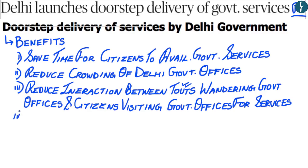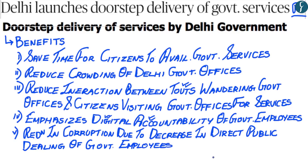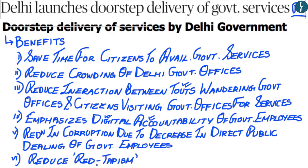The fourth benefit is digital accountability, as payment of fees, verification of documents, and postal delivery are all done through digital platforms. The fifth benefit is reduced corruption, since decreased direct public interaction with government employees reduces opportunities for bribery. The sixth benefit is reduced red-tapism — fewer bureaucratic hurdles for Delhi citizens availing government services.